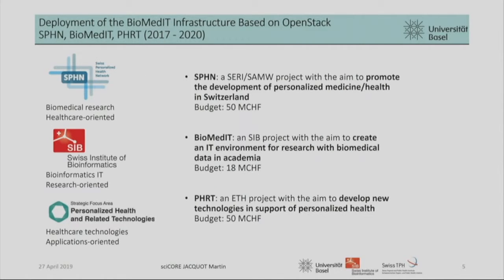Of course, when you have a project you also need funds. For 2017 to 2020, there is one project, SPHN — it's a Swiss national project. We aim to promote the development of personalized medicine in Switzerland, with a budget of 15 million for the project. Then we have the BiomedIT project, hosted and managed by SIB, with a budget of 80 million to set up the infrastructure. There is also another project from ETH aimed at developing new technology in support of personalized health, with a budget of 50 million.